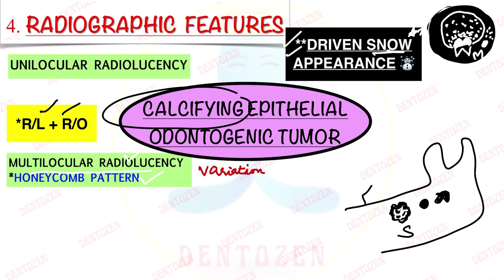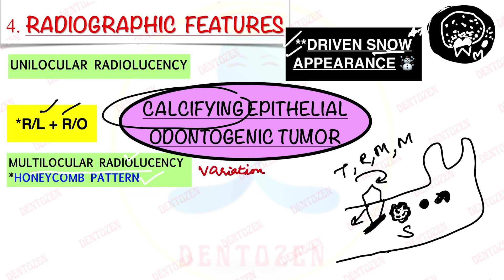This tumor can also cause tipping, rotation, migration, and mobility of teeth secondary to resorption, as it can cause resorption of the roots of teeth, leading to loosening of the teeth. On CT scan, we can see a mass causing buccolingual cortical plate expansion and radiopaque areas of variable sizes and signal intensity. The 'driven snow appearance' is a very important radiographic term for entrance exams.